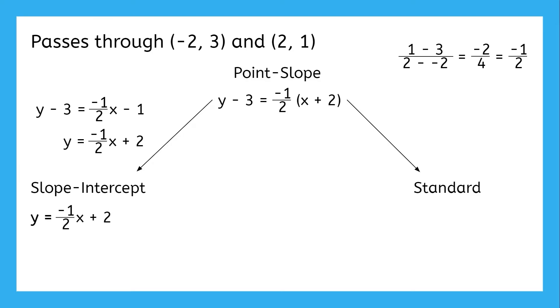Now if we wanted it in standard form instead, we need to manipulate it so that x and y are on one side and constants are on the other. So first we distribute, and then we add one-half x just to move it to the left, and then we add three to move it to the right. Now we just need to make the fraction an integer by multiplying everything by two.